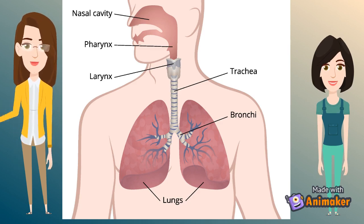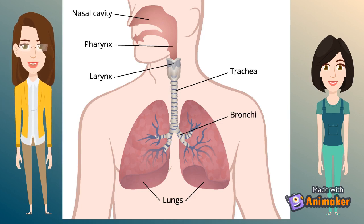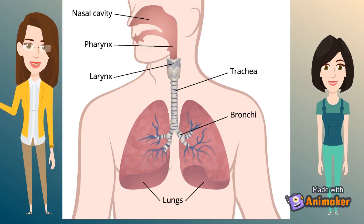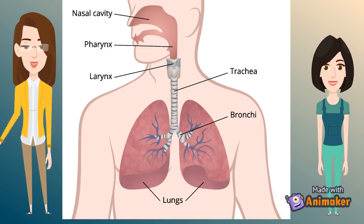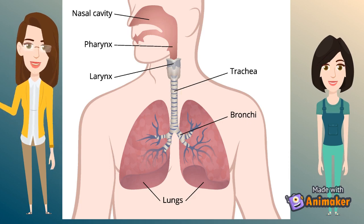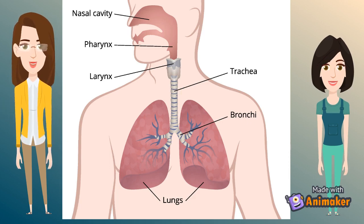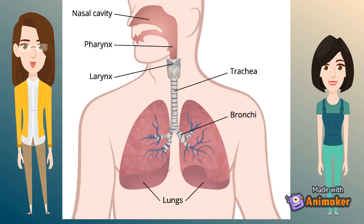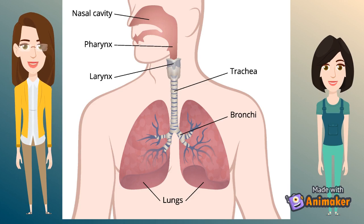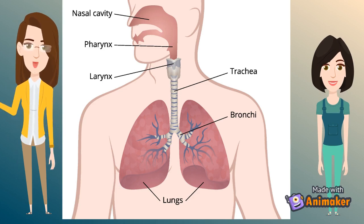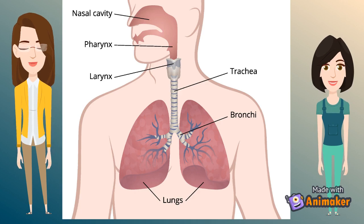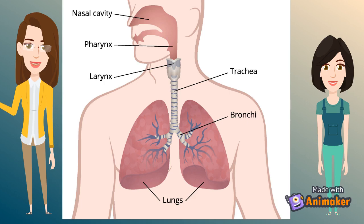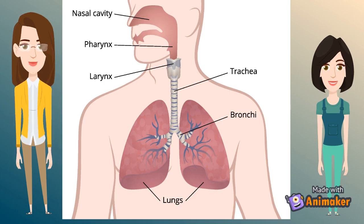Let's start with the first organ, the nasal cavity or the nose. Humans have exterior nostrils which are divided by a framework of cartilaginous structure called the septum. The structure that separates the right nostril and left nostril is the septum. Tiny hair follicles that cover the interior part of the nostril act as the body's first line of defense against foreign pathogens and provide additional humidity for inhaled air.